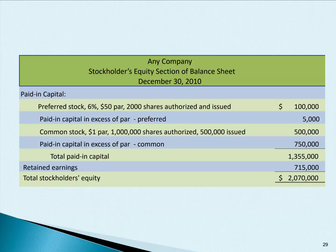The paid-in portion, or contributed — which means it was contributed or paid in by the stockholders — is $1,355,000, and retained earnings is $715,000.